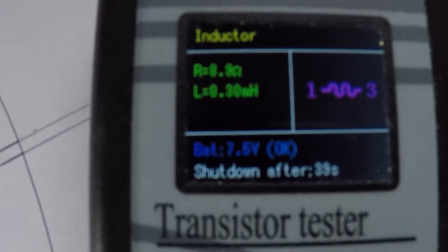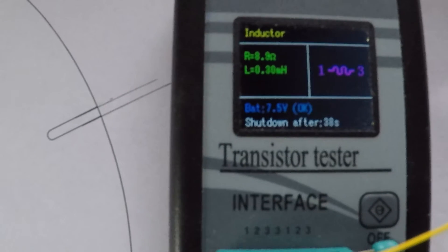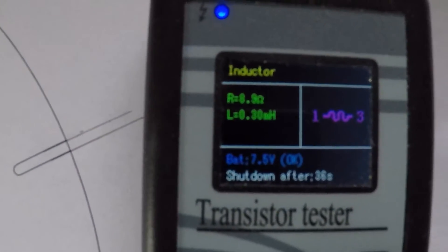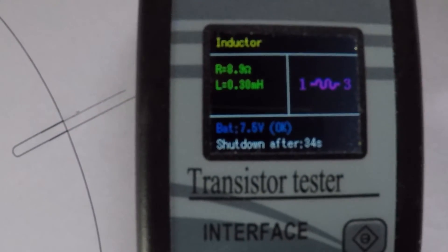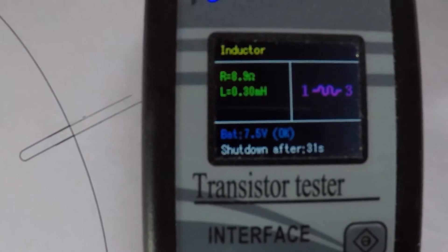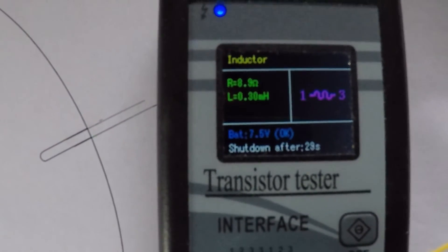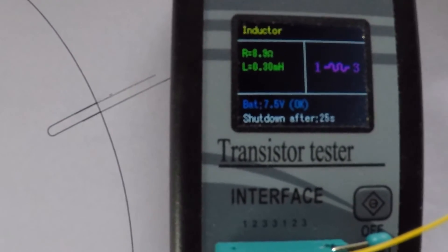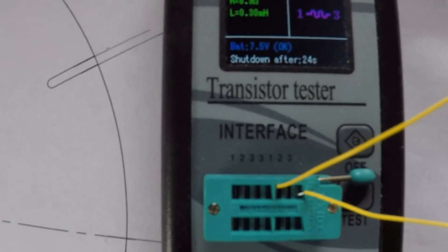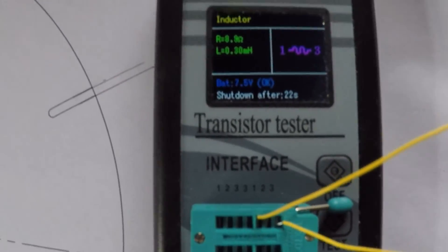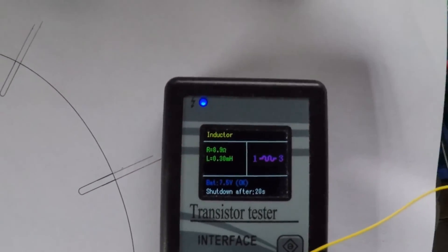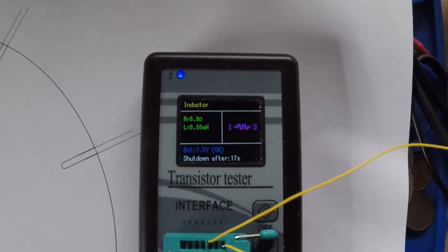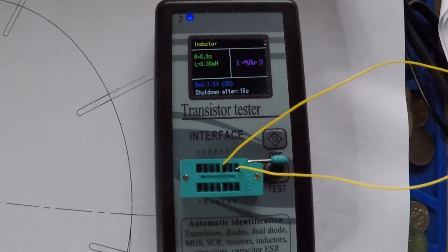It's about 300 microhenries. And here, the resistance reading says 8.9 ohms. I think I trust the multimeter more, like 7.2 ohms. So that's that.